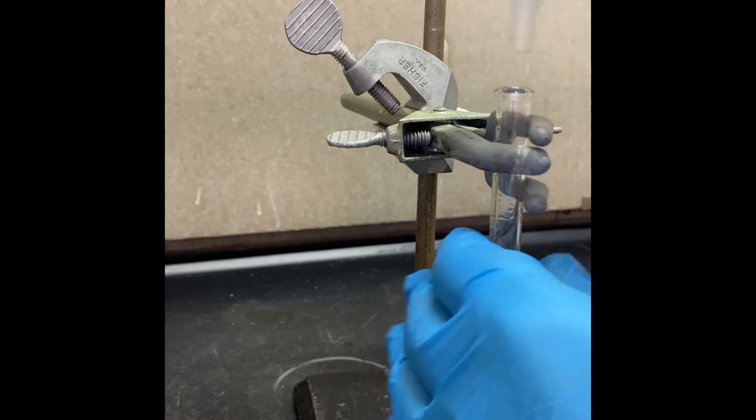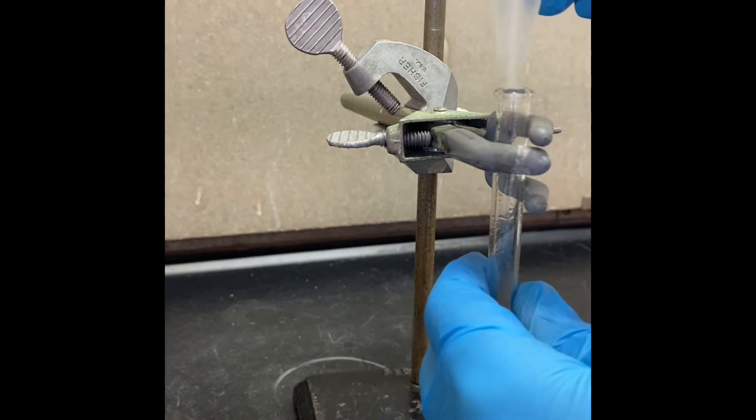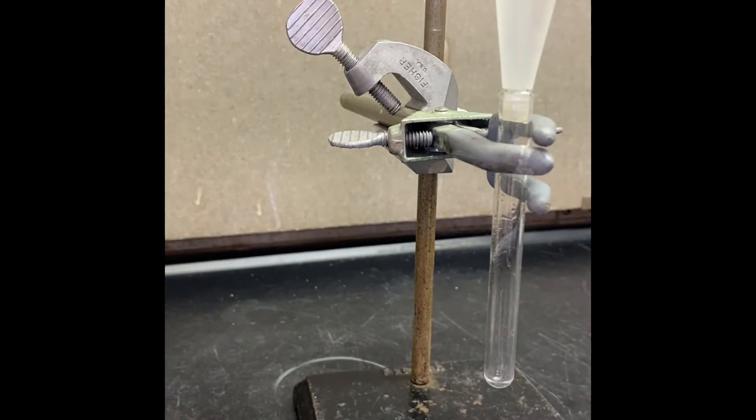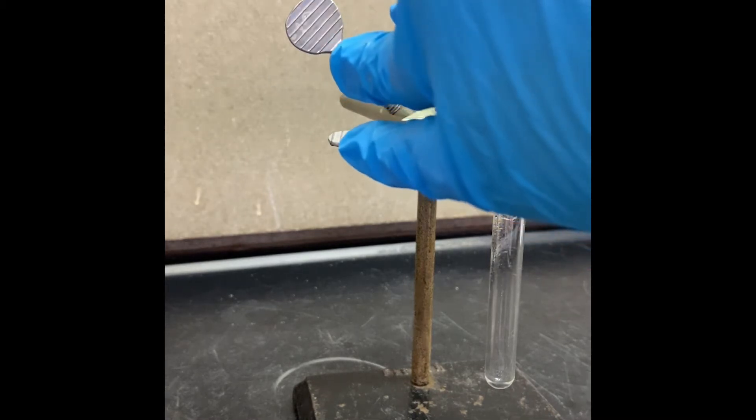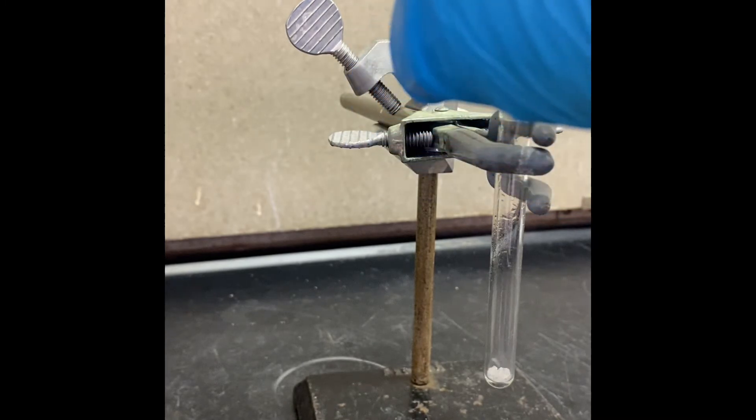1,4-dimethoxybenzene is a solid so I am going to use that funnel for that. I am going to get 120 milligrams of 1,4-dimethoxybenzene and now I am transferring that to my reaction flask.